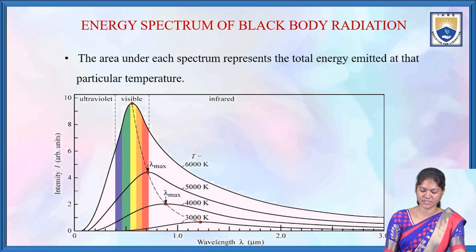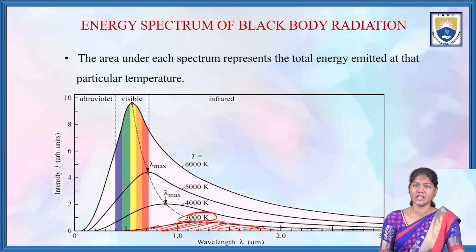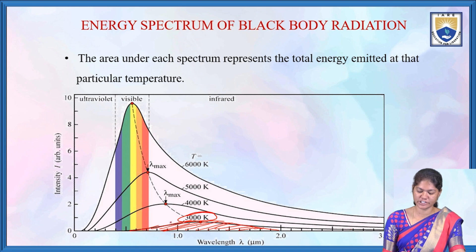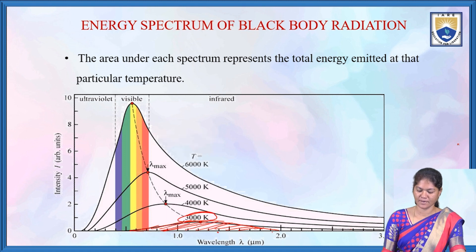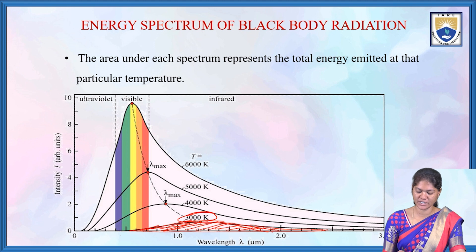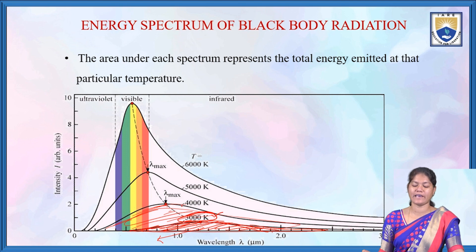The area under each spectrum represents the total energy emitted at that particular temperature. At 3000 K, the energy emitted is calculated by the area under that curve. Similarly, the area under the 4000 K spectrum gives the total energy emitted at that temperature.